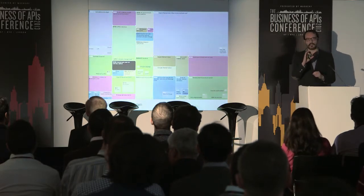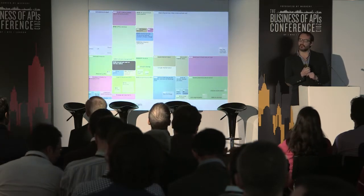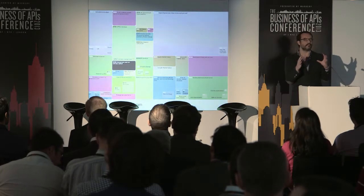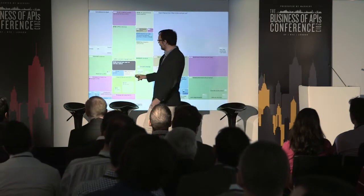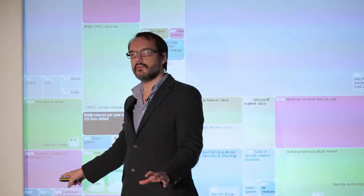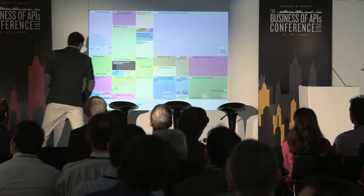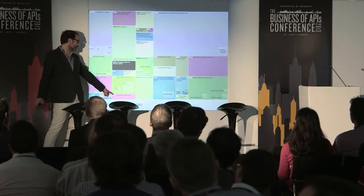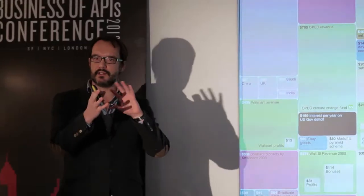More importantly, you can start to see patterns and connections between numbers that would otherwise be separated across multiple news reports — you'd never see them together. This pink block on the left is how much is given by the American people to charity every year: 300 billion a year. You can contrast that with the amount given in foreign aid by the top industrialized nations — just 120 billion. Stories start to emerge when you get these connections going.